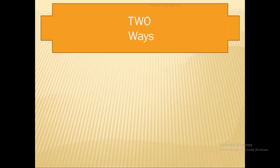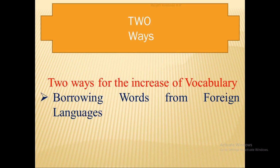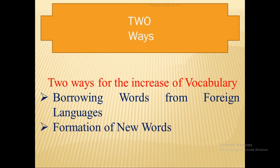Coming to the topic of word formation, there are chiefly two ways new words are added to the vocabulary. One is borrowing words from foreign languages. For example, after the Norman Conquest in 1066, French words were added into English, automatically enriching its vocabulary. The second way is the formation — the creation of new words — according to the need and the changing context. These are the two main ways for the increase of vocabulary: borrowing from foreign languages and the formation of new words.